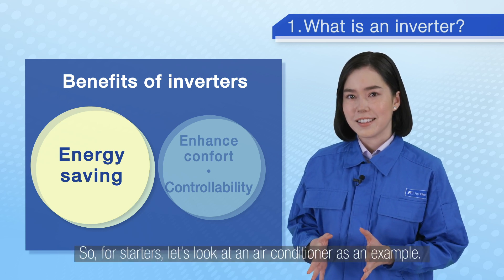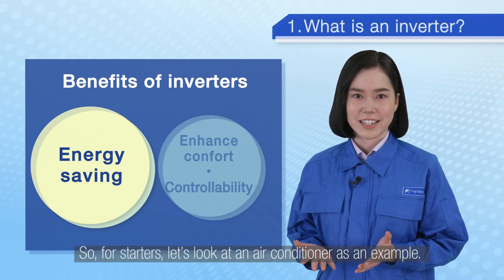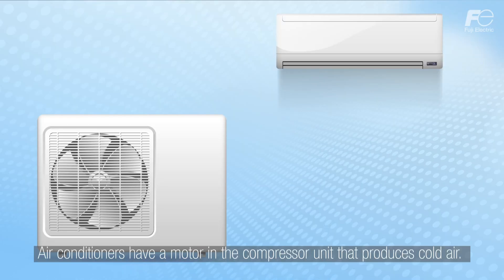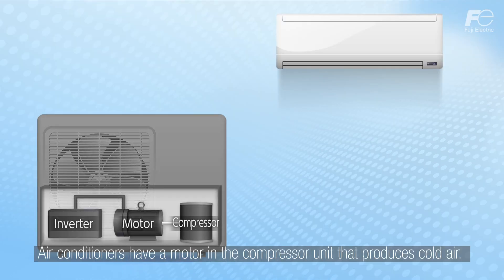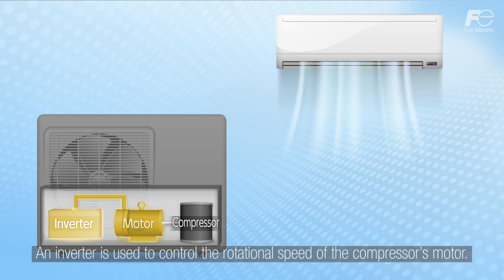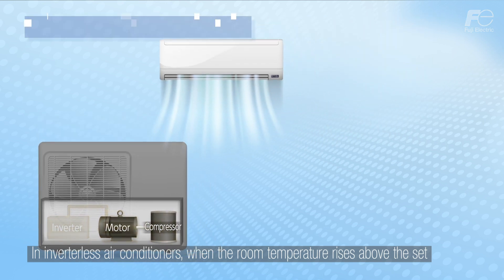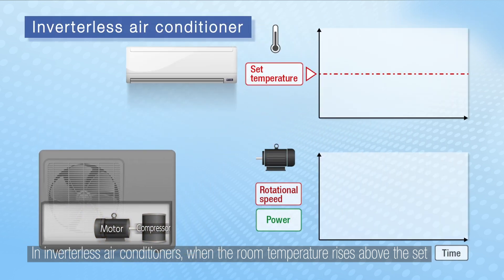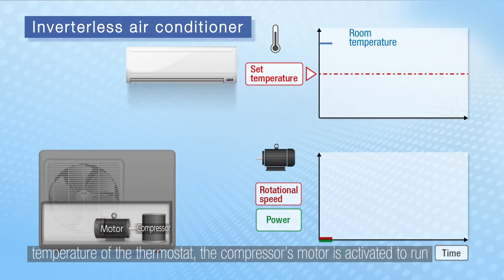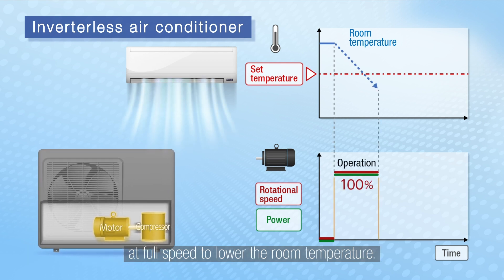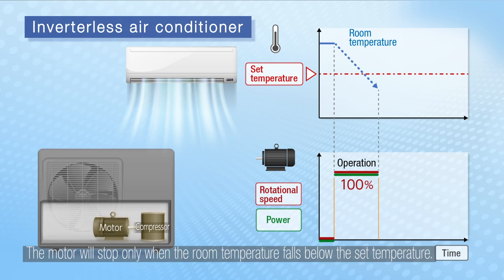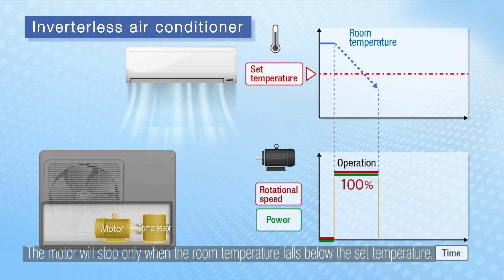Let's look at an air conditioner as an example. Air conditioners have a motor in the compressor unit that produces cold air, and an inverter is used to control the rotational speed of the compressor's motor. In inverterless air conditioners, when the room temperature rises above the set temperature of the thermostat, the compressor's motor is activated to run at full speed to lower the room temperature. The motor will stop only when the room temperature falls below the set temperature.